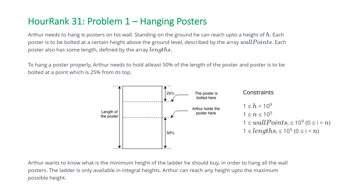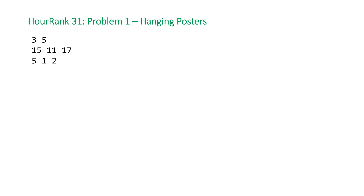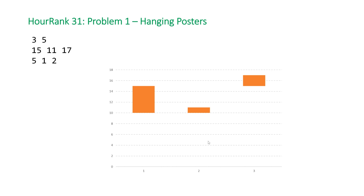Let's take a look at one of the examples HackerRank provided. The first number is n=3, the number of posters. The next number is h, the height Arthur can reach. The next two lines describe the top heights of where the posters are going to be hung, and then the lengths of these posters. We have three posters: one starts at height 15 with length 5, the next starts at height 11 with length 1, and the final one has height 17 with length 2.